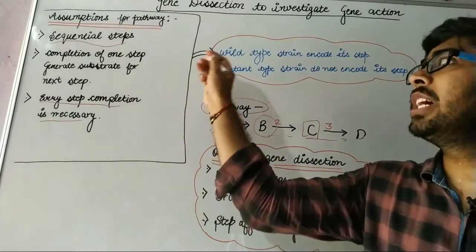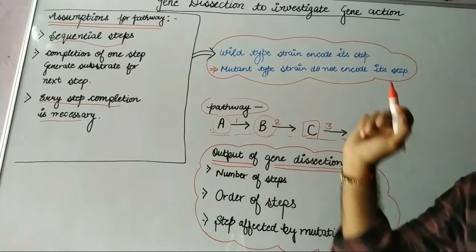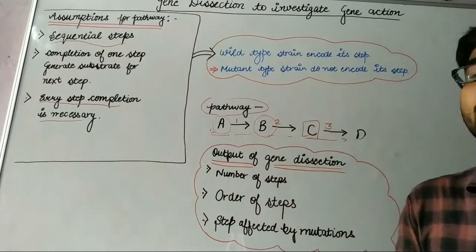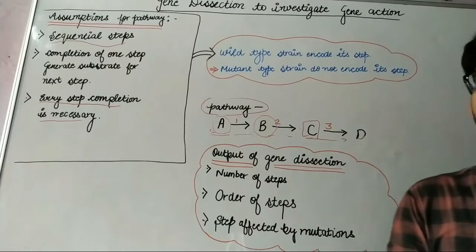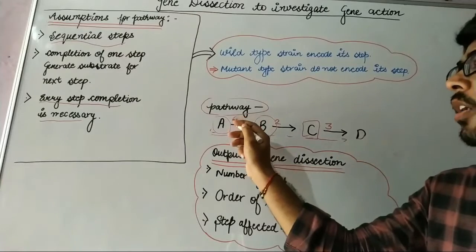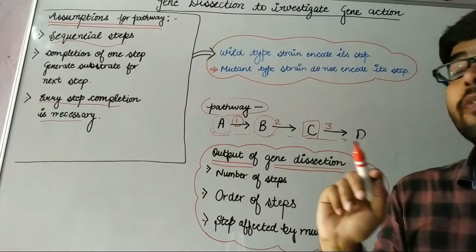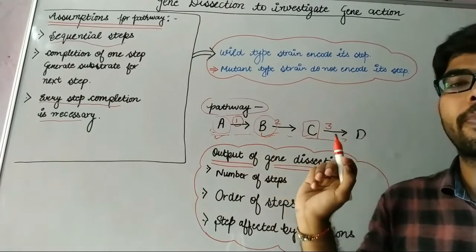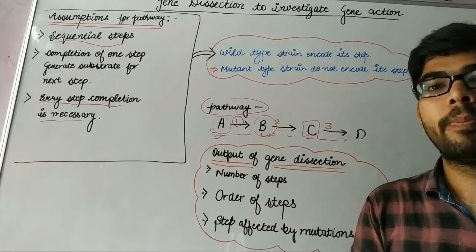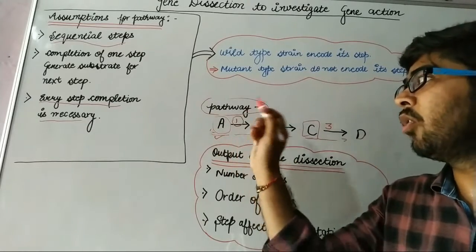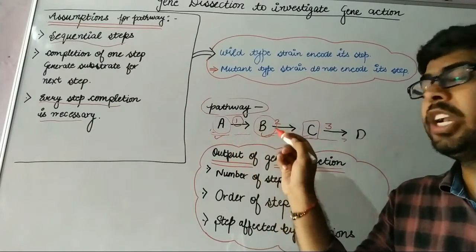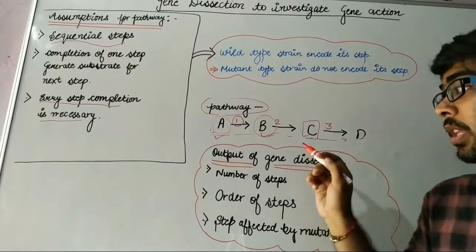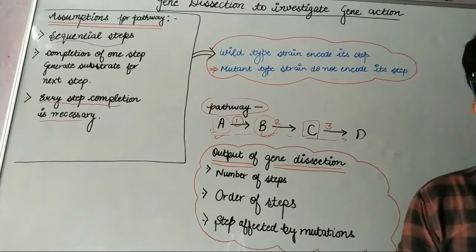Now there are some outcomes. The wild type strain encodes each step, whereas the mutant type strain does not encode its steps. For example, enzyme 1 in wild type form converts A into B, but in mutant form there is no conversion of A into B. Now, what are the outputs we can find from gene dissection?